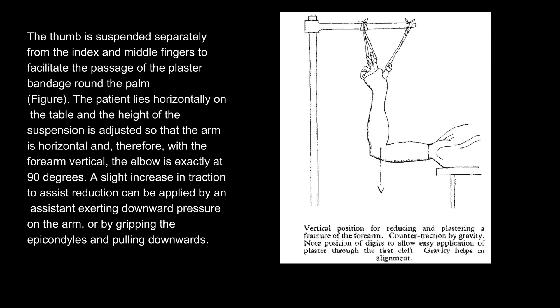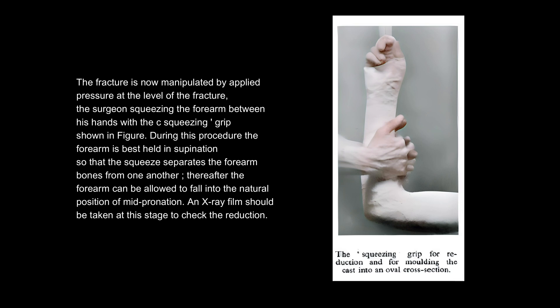The fracture is now manipulated by applied pressure at the level of the fracture, the surgeon squeezing the forearm between his hands with the C-squeezing grip shown in the figure. During this procedure the forearm is best held in supination, so that the squeeze separates the forearm bones from one another.